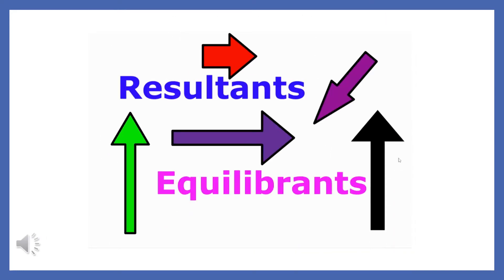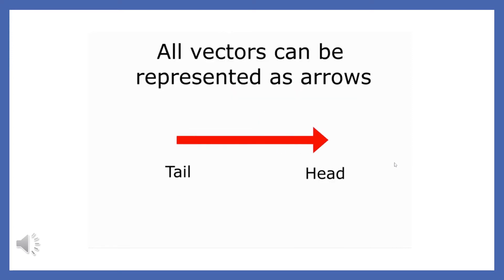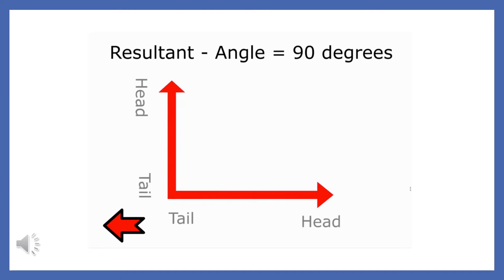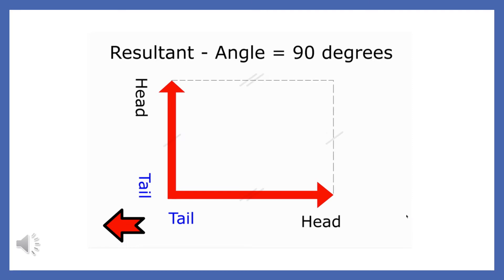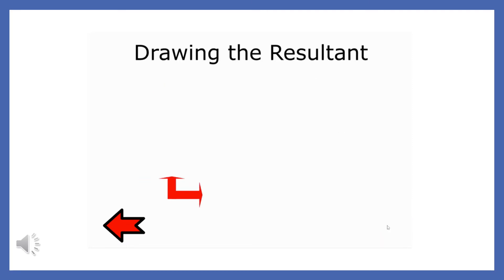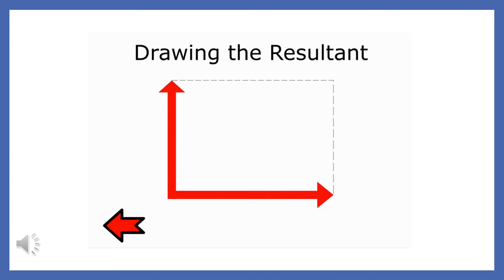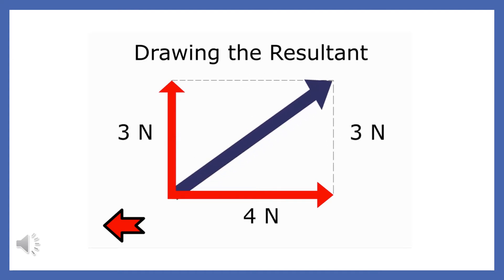Before we go any further, let's review what you already know about resultants. A resultant is the single force that will produce the same result as two or more forces. When two forces are drawn tail to tail, you find the resultant by using two dotted lines to turn your picture into a parallelogram. A diagonal line drawn from the base of the force vectors will give you your resultant.